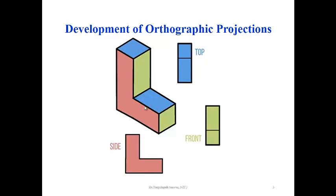This L-block is an isometric projection showing three colors. The blue color is in the top direction, the green color is in the front direction, and the pink color is in the side direction. According to the view, the blue blocks are showing as a top view, and the green blocks are showing as a front view, whereas the pink color in the view is a side view.